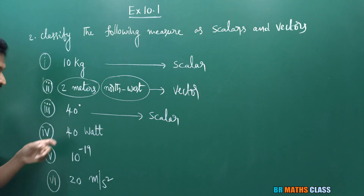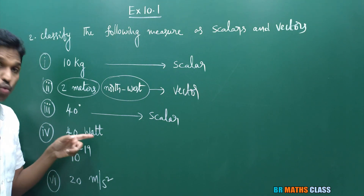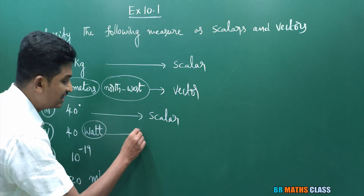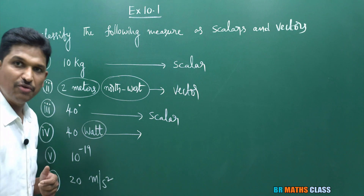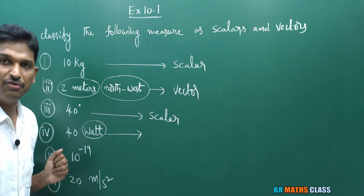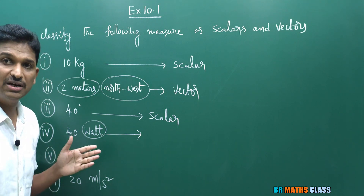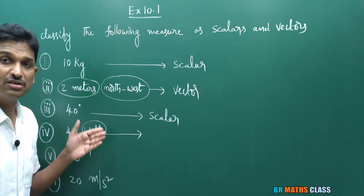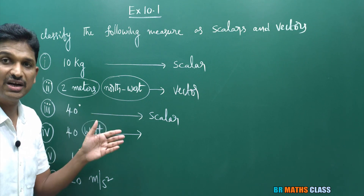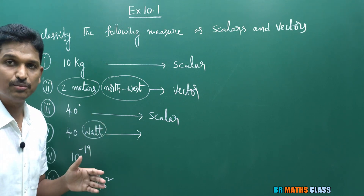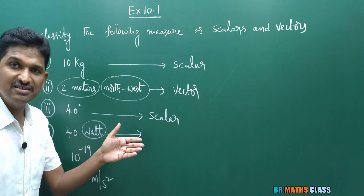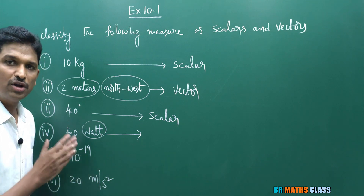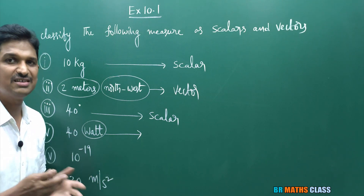Now see 40 watt. Watt is the unit of power. Power is a scalar quantity because power is work done divided by time. Work done is a scalar and time is also a scalar. So 40 watt is a scalar.